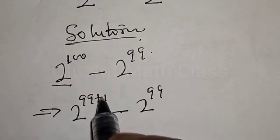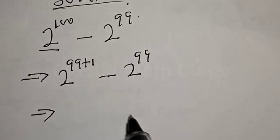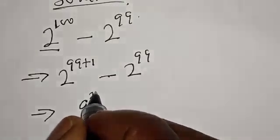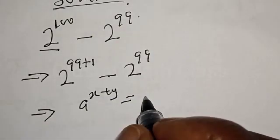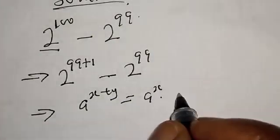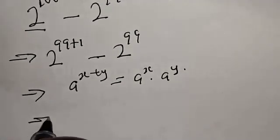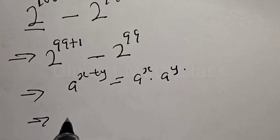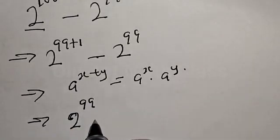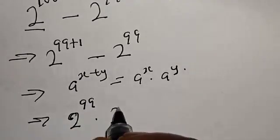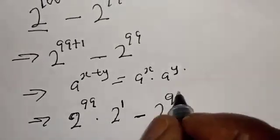We know that 99 plus 1 is equal to 100. Now this implies that if you have a raised to power s plus y, it is equal to a raised to power s multiplied by a raised to power y. This implies that we have 2 raised to power 99 multiplied by 2 raised to power 1, minus 2 raised to power 99.